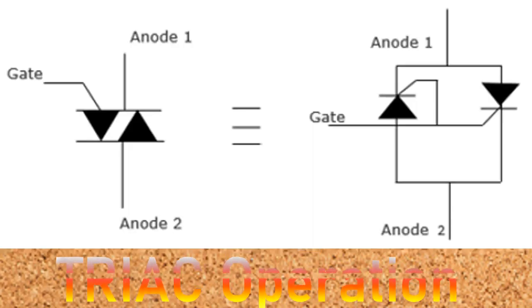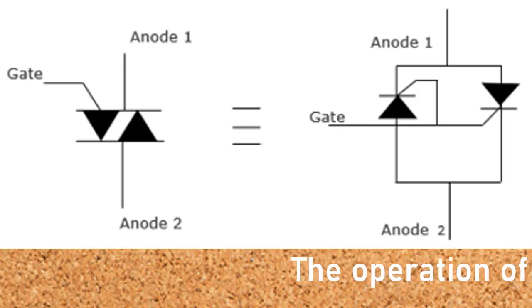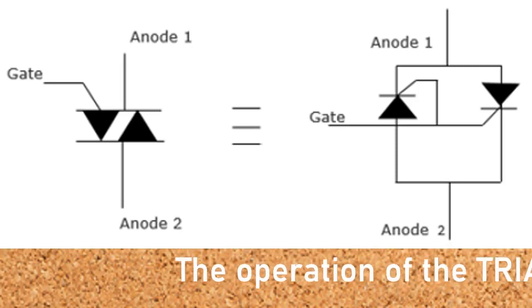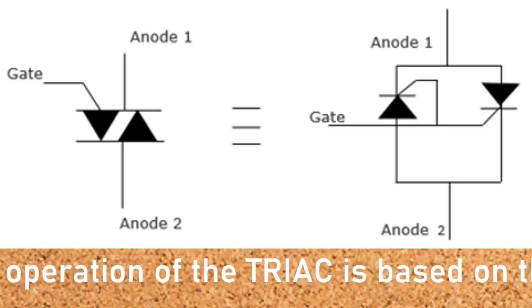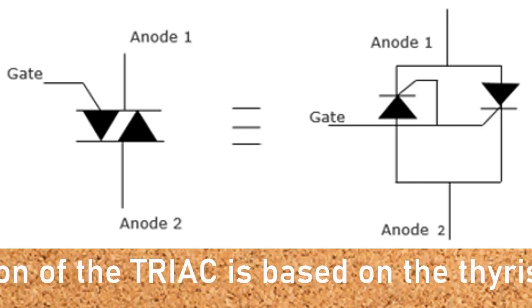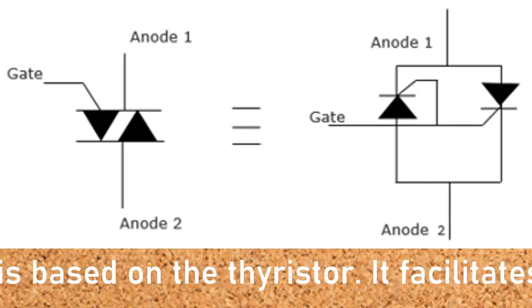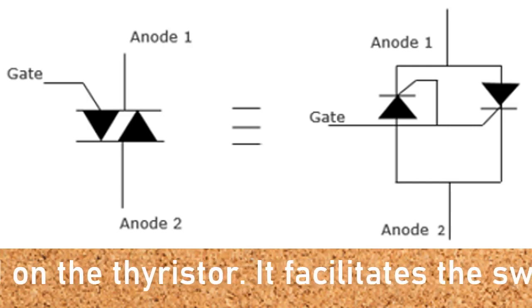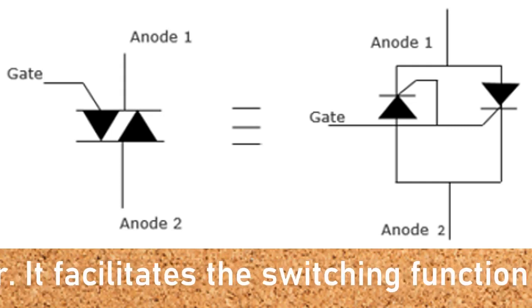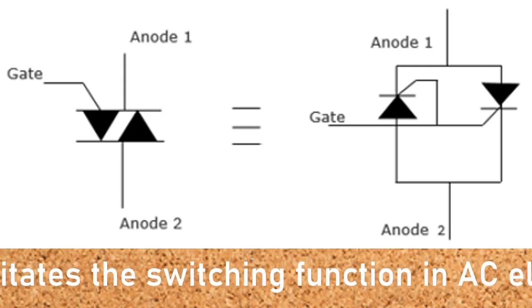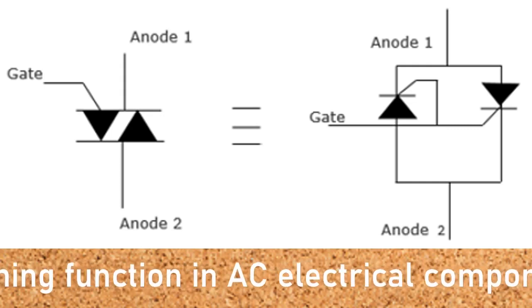TRIAC operation. The operation of the TRIAC is based on the thyristor. It facilitates the switching function in AC electrical components and systems. They are widely used in light dimmers because they allow both halves of the AC cycle to be utilized. As a result, this makes them more efficient in power usage. As much as it is possible to use thyristors to function as a TRIAC, it is not cost-efficient for operations that require low power.